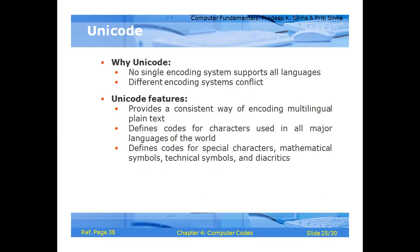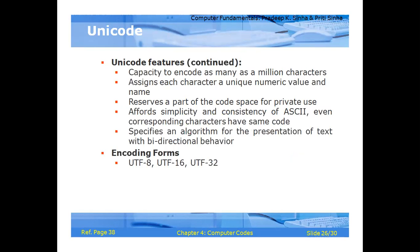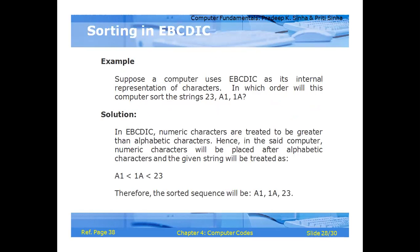The last code is Unicode. No single encoding system supports all languages, and different encoding systems conflict. Unicode provides a consistent way of encoding multilingual text. It defines codes for characters used in all major world languages, as well as special characters, mathematical symbols, and technical symbols. Unicode has the capacity to encode as many as one million characters, assigning each character a unique number and name. Its encoding forms include UTF-8, UTF-16, and UTF-32.